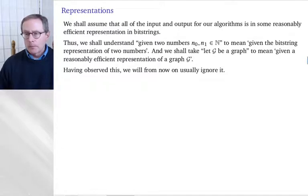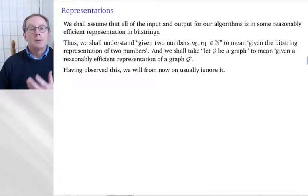Representations. So, we will assume that all the input and output for our algorithm has some reasonably efficient representation, and we will assume it has bit strings. So, that is to say, although we will say, given two numbers, n0 and n1, natural numbers, we will take that to mean, given the bit string representation of those two numbers. Now, of course, it would be pedantic to say the second one, but nonetheless, on occasion, we will have reason to notice the difference.